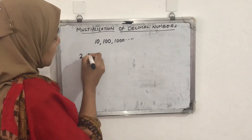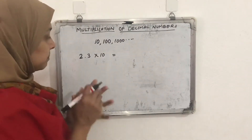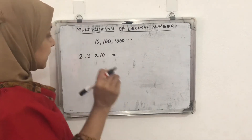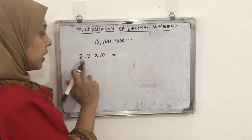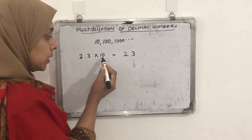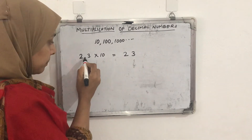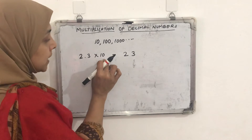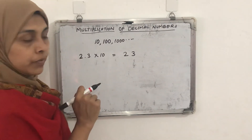Let's take one example: 2.3 multiplied by 10. Here the multiplicand is 2.3 and the multiplier is 10. The digits in the product will be the same as in the multiplicand — 2 and 3. Now count how many zeros are in 10 — only one zero. So we shift the decimal point one place to the right side.